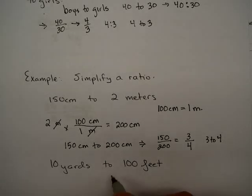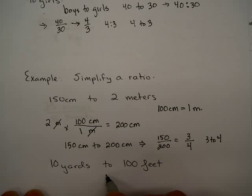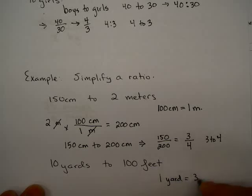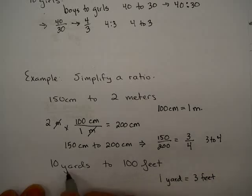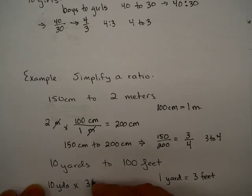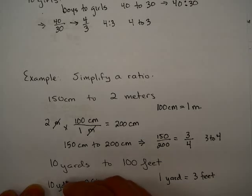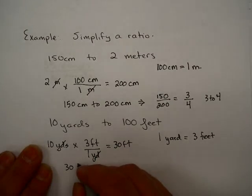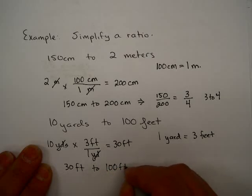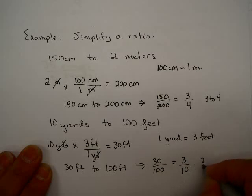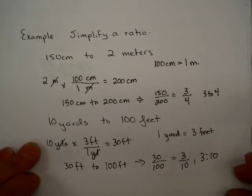10 yards to 100 feet. See if you can do that one yourself. Remember the conversion factor between yards and feet: 1 yard is 3 feet. I'm going to convert to the smaller unit, feet. I'm going to take 10 yards and multiply by 3 feet in 1 yard. The yards divide out and that gives me 30 feet. So we have 30 feet to 100 feet, which gives me 30 over 100 or 3 over 10, which also can be written 3 colon 10 or 3 to 10.